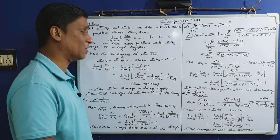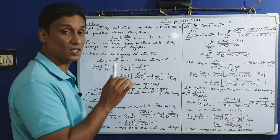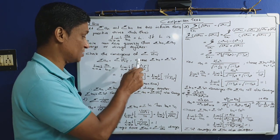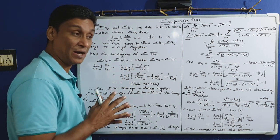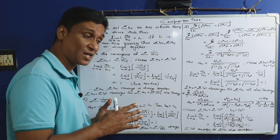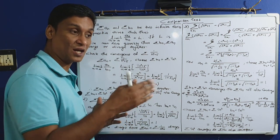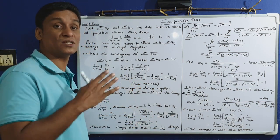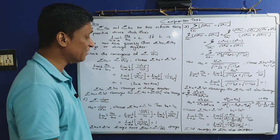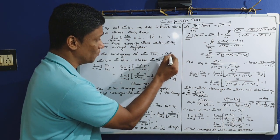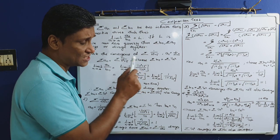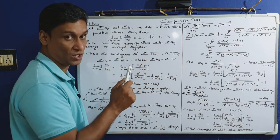Check the convergence of sigma from n equal to 1 to infinity of 1 by n squared plus 5. So sigma a_n equals sigma 1/(n²+5), meaning a_n = 1/(n²+5). The comparison test is the simplest test. We compare it to a different infinite series sigma b_n. Looking at the structure, sigma 1/(n²+5) is almost like sigma 1/n².